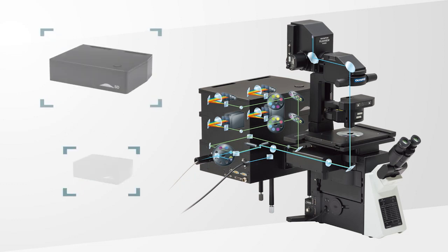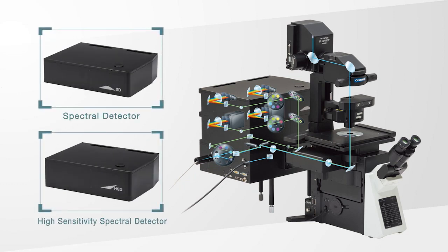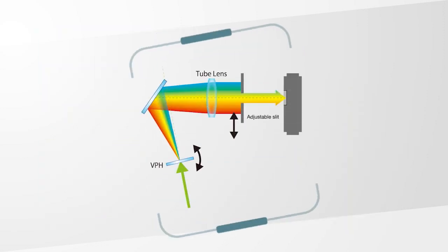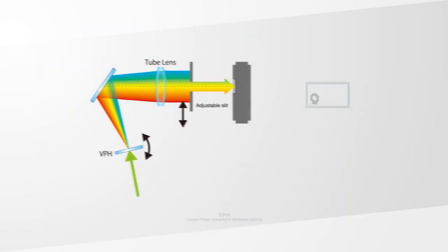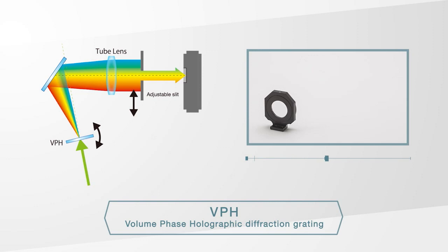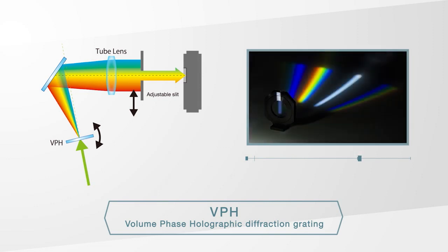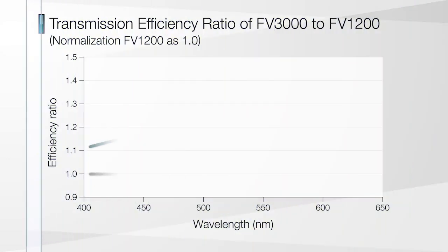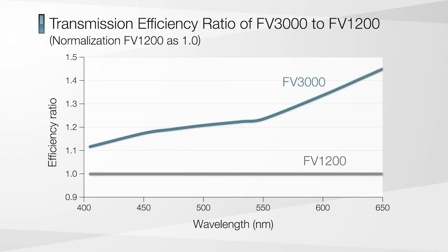The FV3000 series features the innovative new true spectral detection concept. True spectral uses transmission holographic diffraction gratings with a detection and resolution power of two nanometers. The true spectral technology is used in every fluorescence channel for flexibility and excellent sensitivity and spectral detection.